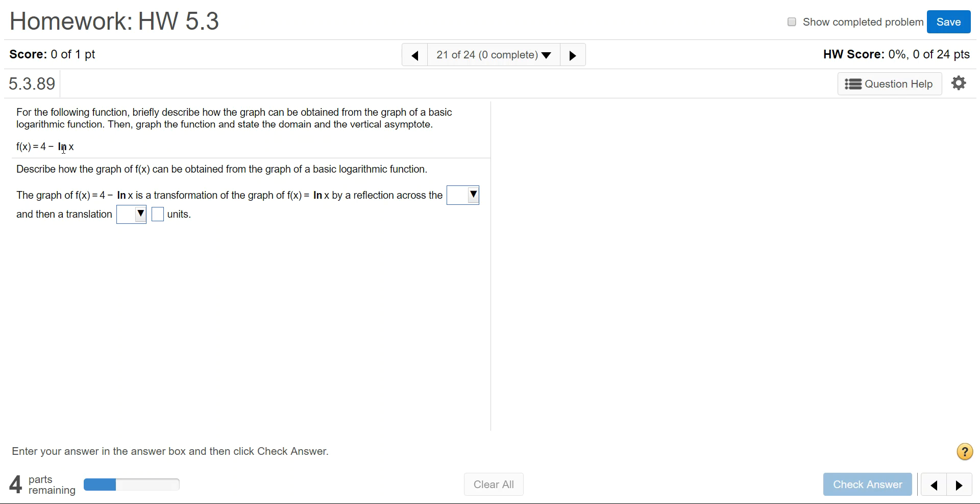So if I rearrange this equation so that the logarithm is written first, notice that the negative is attached to that, so it would be negative ln(x) plus 4. The negative in front of the logarithm creates a reflection over the x-axis, and the plus 4 is a vertical upward movement of 4 units.